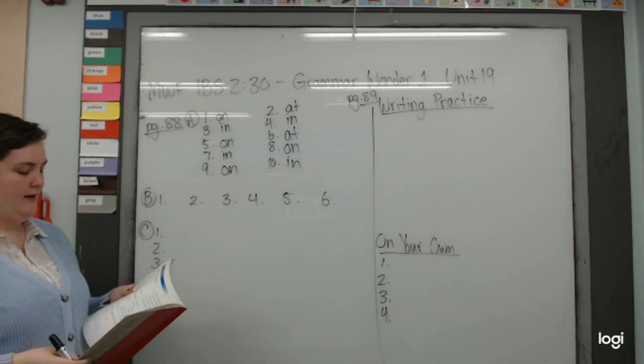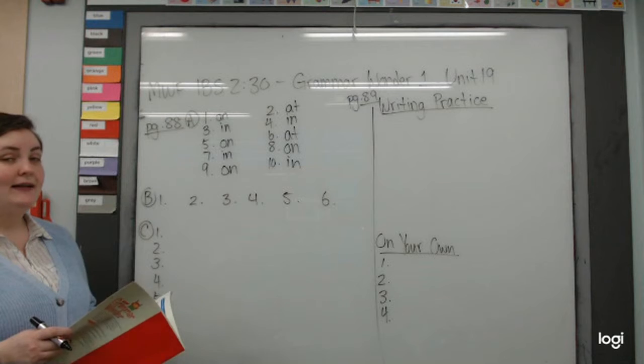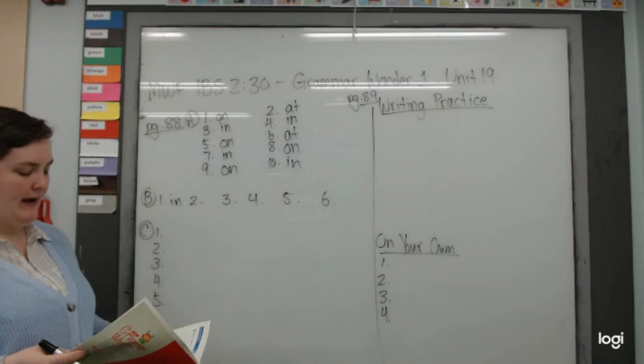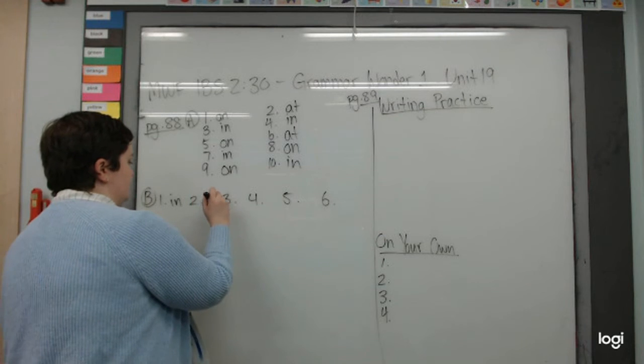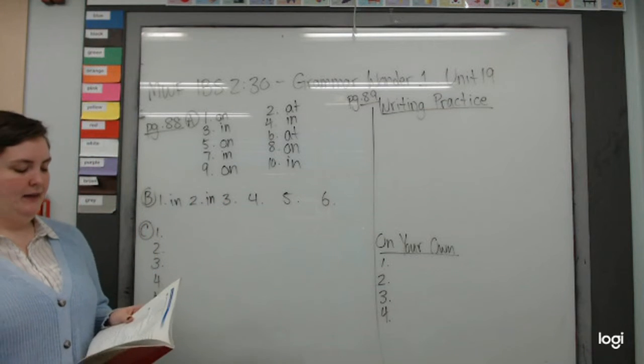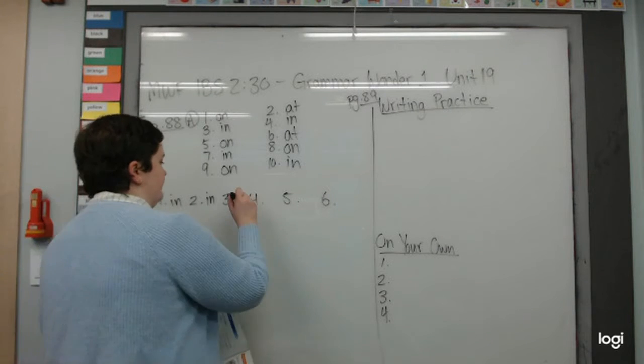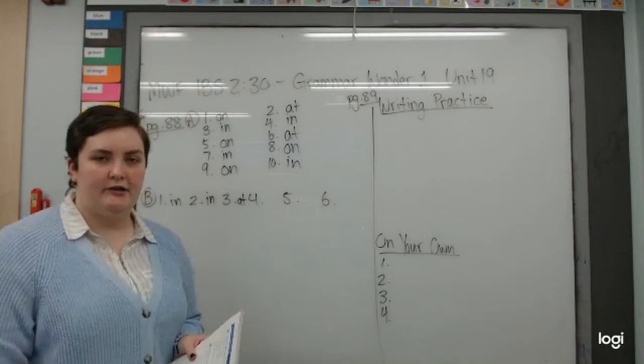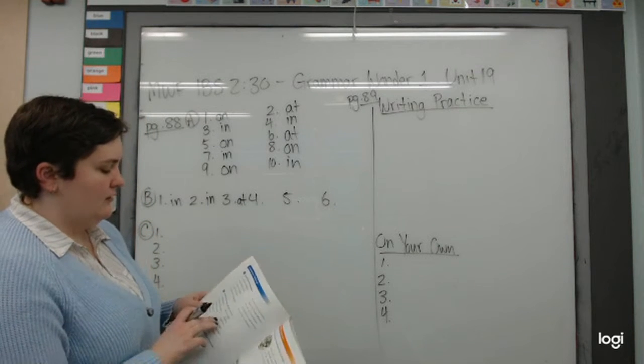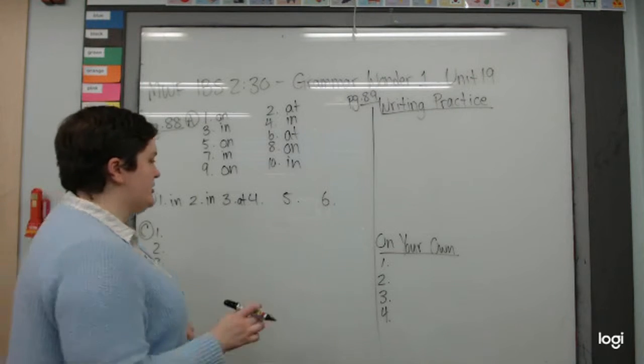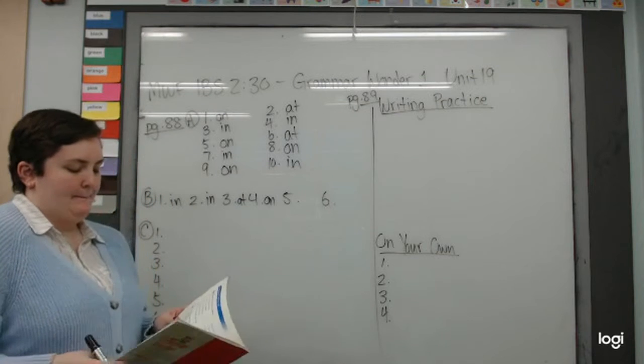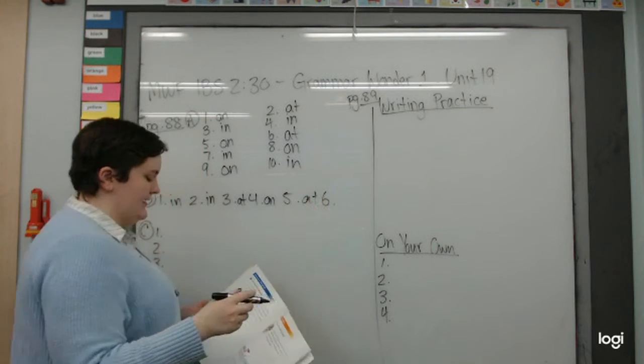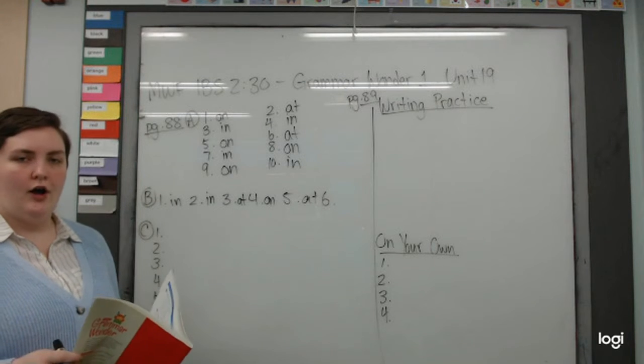Part B. Number one, Mom gets up early in the morning. Number two, you can see many flowers in spring. Number three, they play badminton at lunchtime. If it ends in time, like dinner time, lunch time, we say at. Number four, we had lots of fun on Children's Day. Number five, Pat and I met at three o'clock yesterday. And six, my family will go to a movie on Friday.